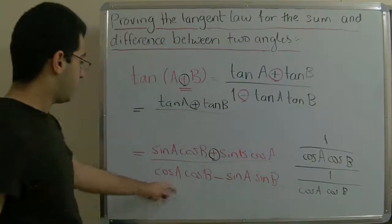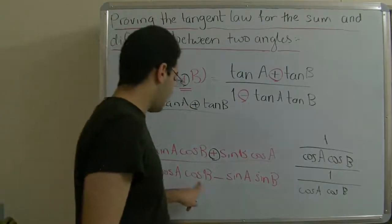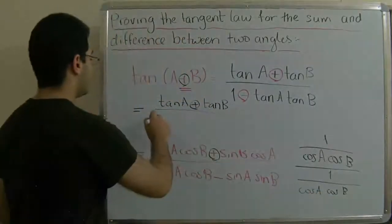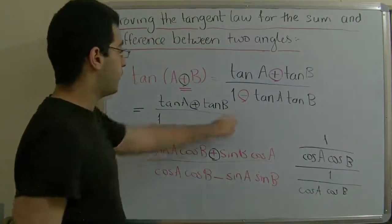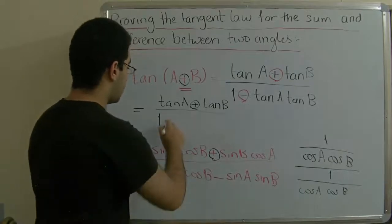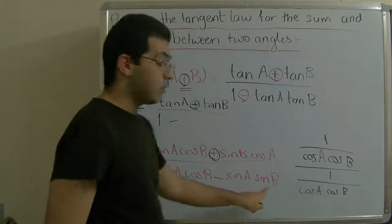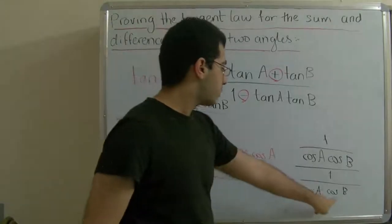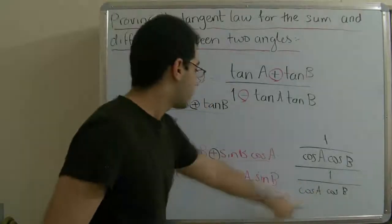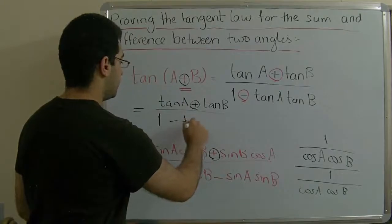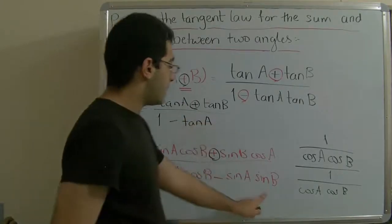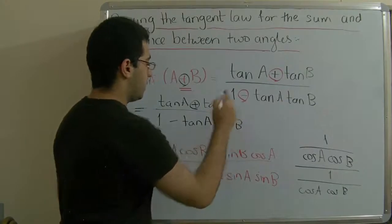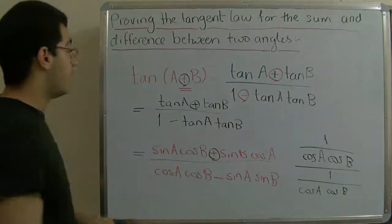In the denominator, cosine a cosine b over cosine a cosine b equals one — that is where the one comes from. Then the negative sign, and sine a sine b over cosine a cosine b gives us sine a over cosine a times sine b over cosine b, which is tan a times tan b. And this is where the rule comes from.